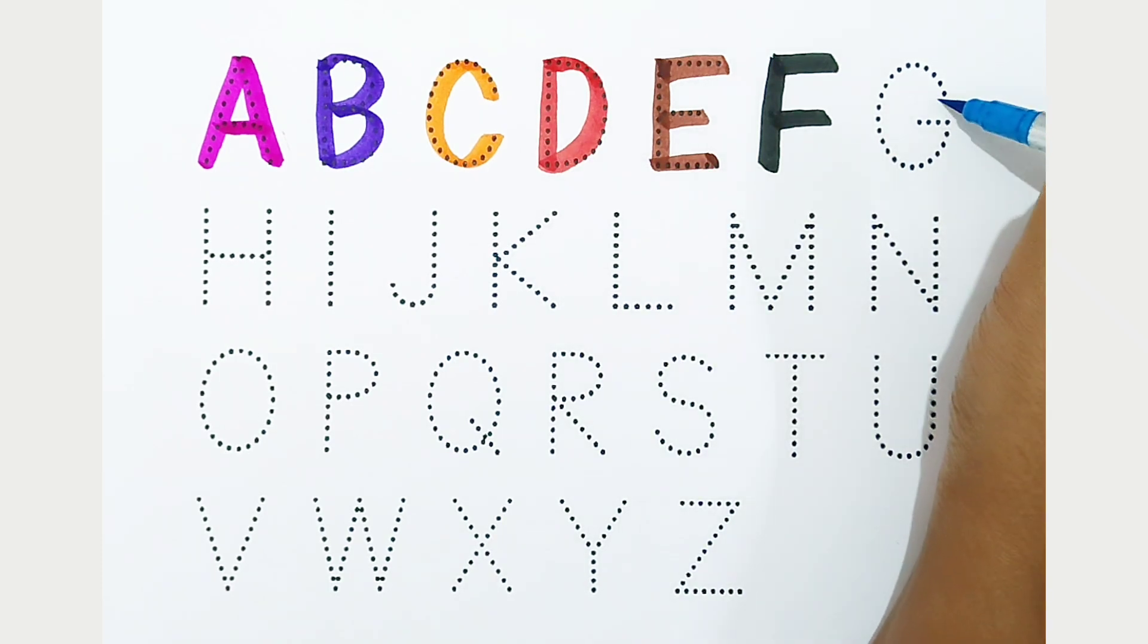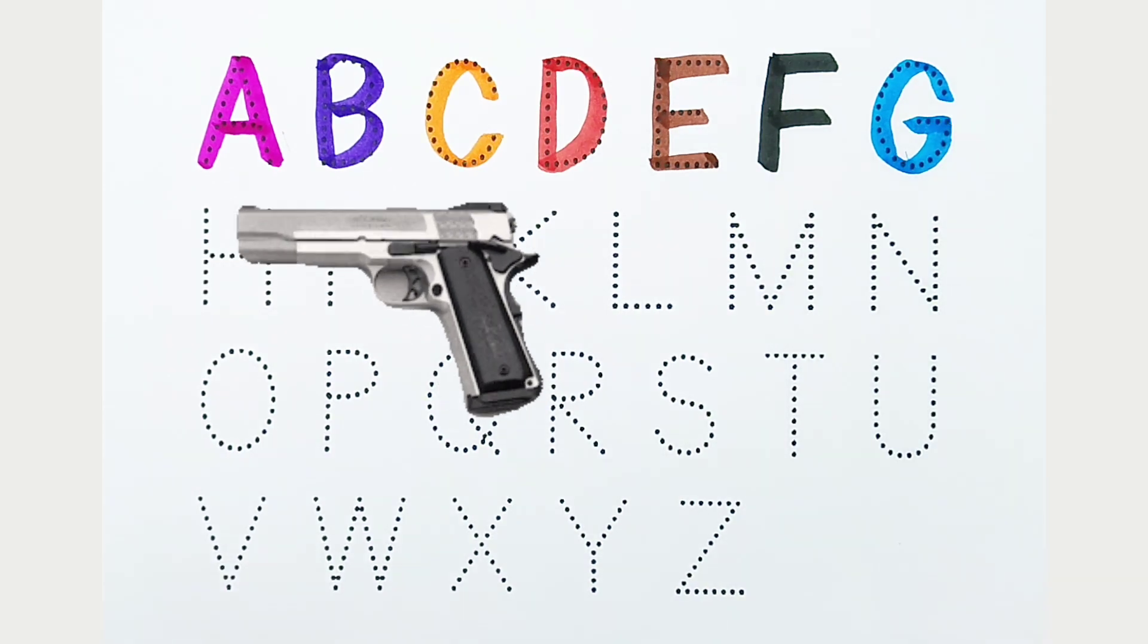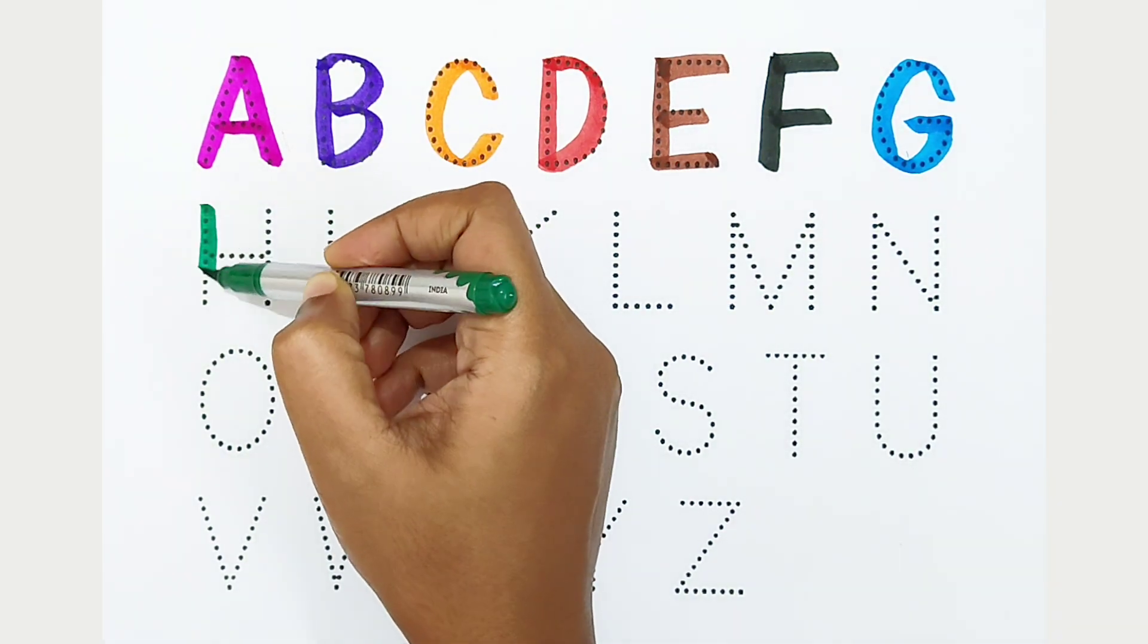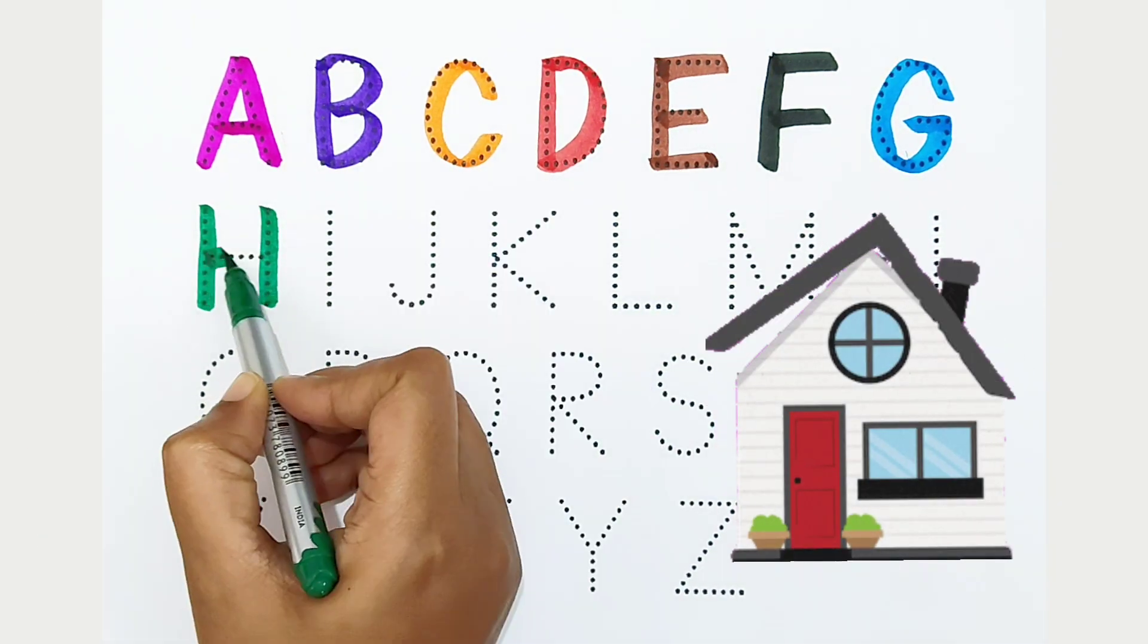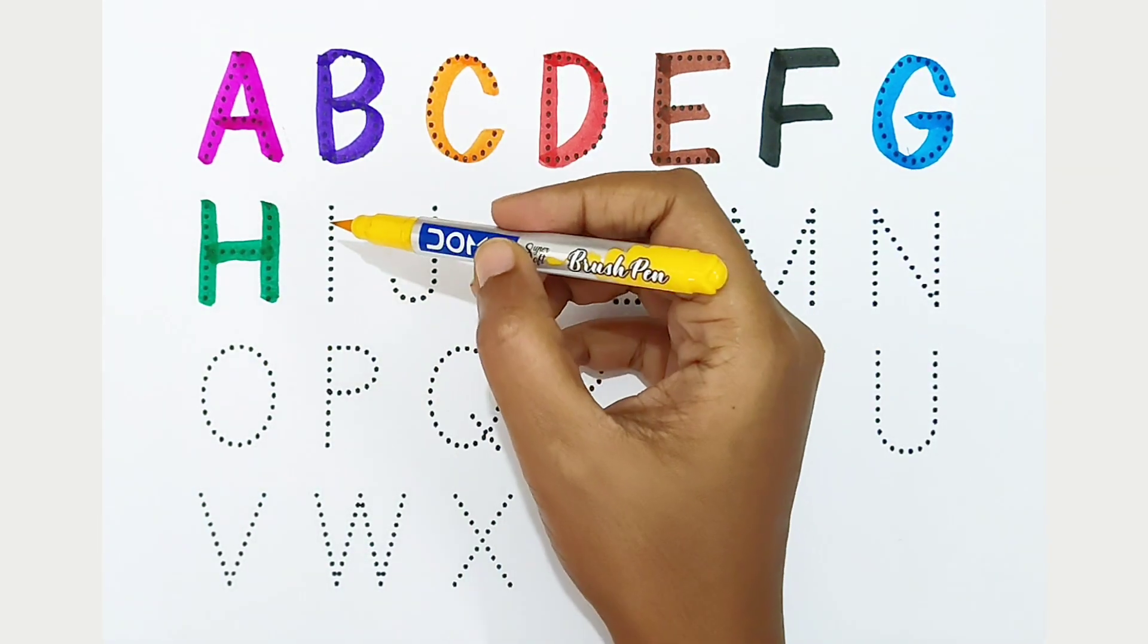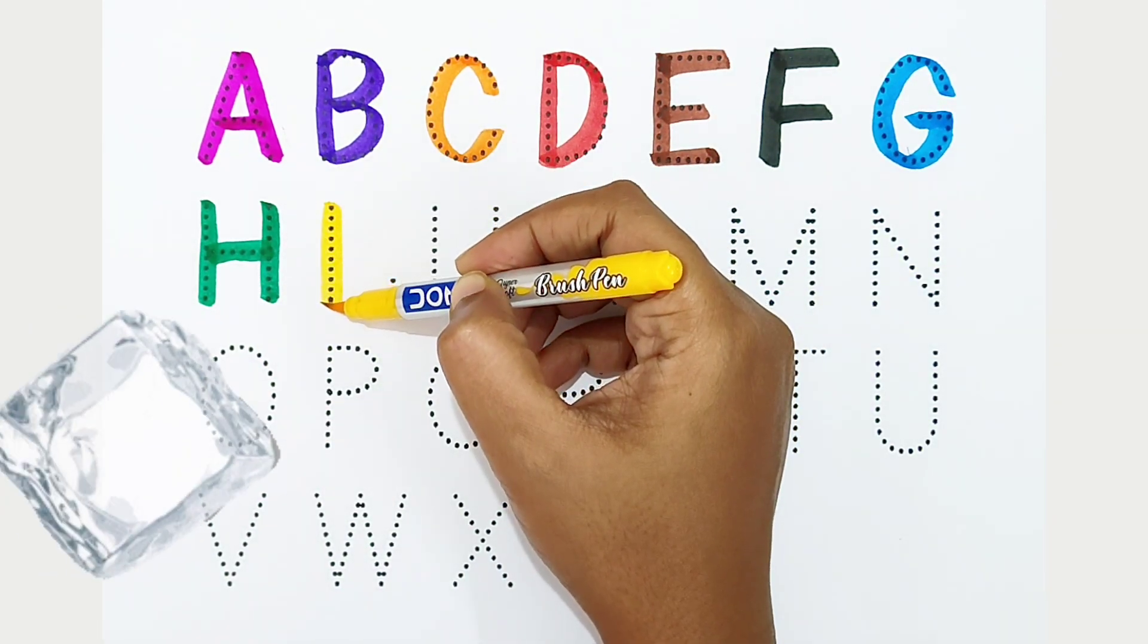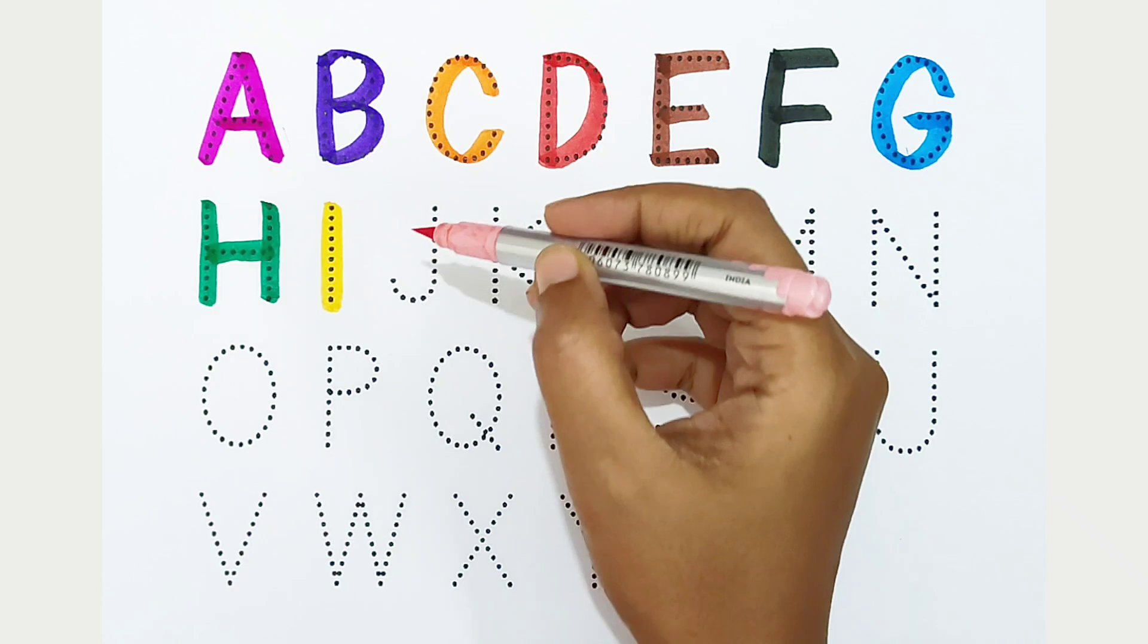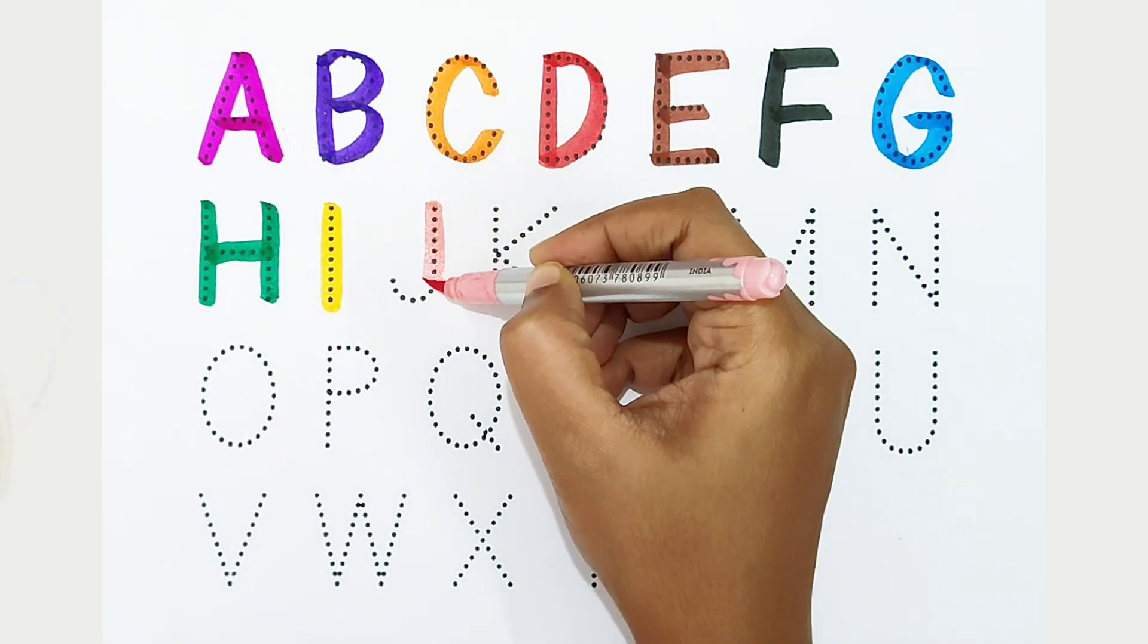G, light blue color, G is for gun. H, dark green color, H is for home. I, yellow color, I is for ice. J, light pink color, J is for jug.